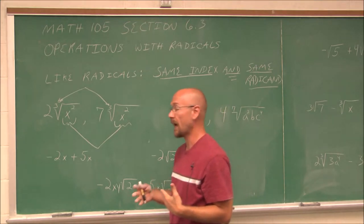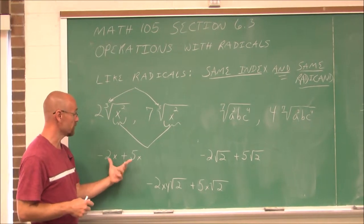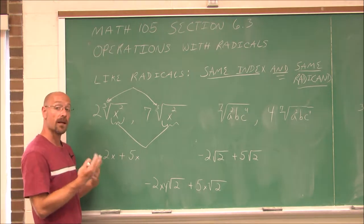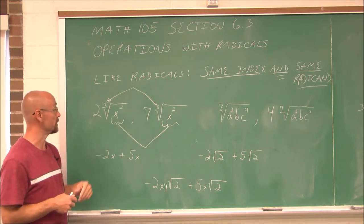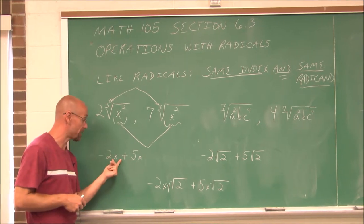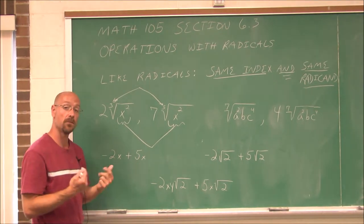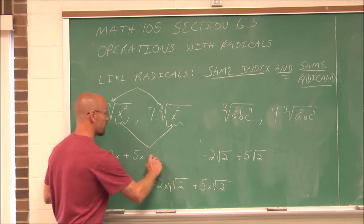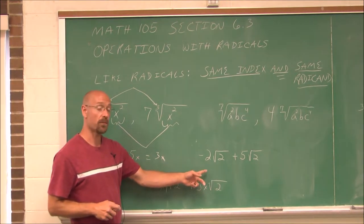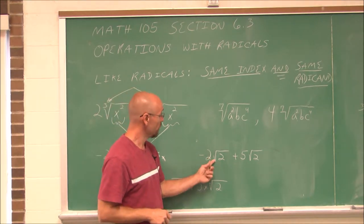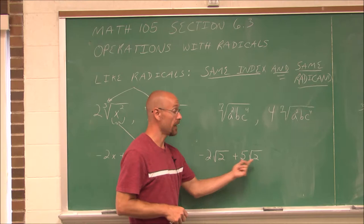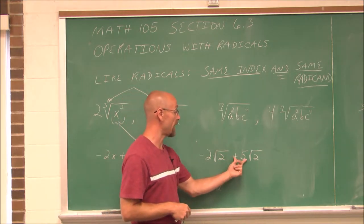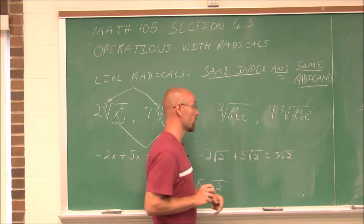We've dealt with combining like terms when it comes to adding or subtracting. These variables are the same and they have the same power — that's essentially what we did when we looked at a like radical: it had to have the same index and the same radicand. So if I were to add or subtract, negative 2x plus 5x is going to be 3x. We can do the same thing with radicals. If I have negative 2 of them and I'm going to add 5 of them, I'm going to get 3 square roots of 2.